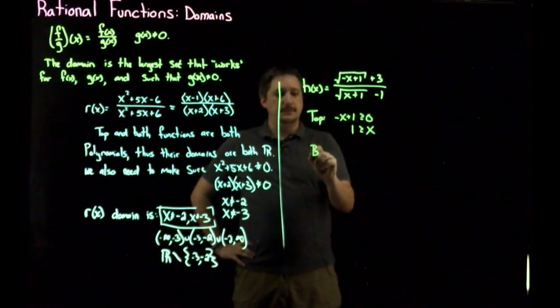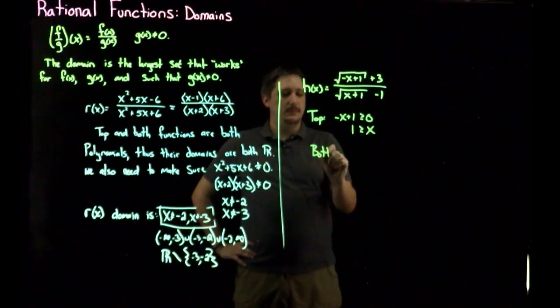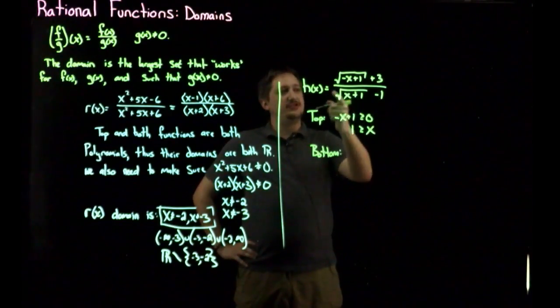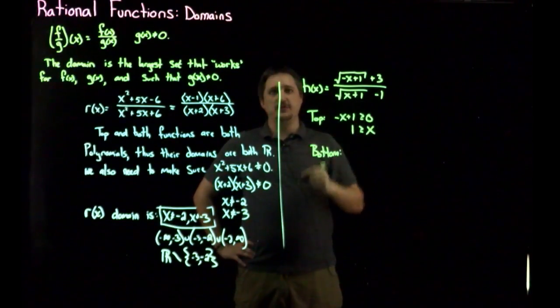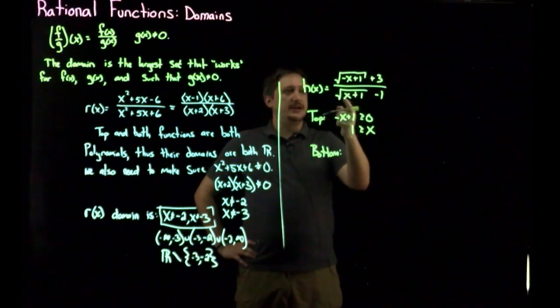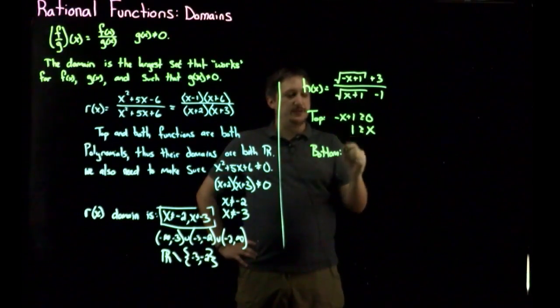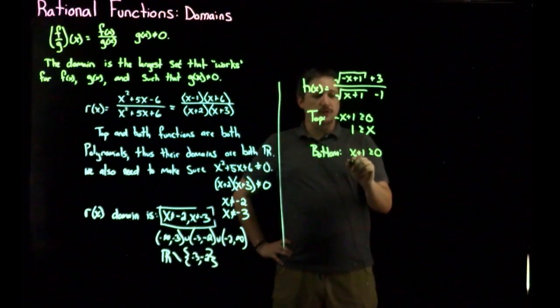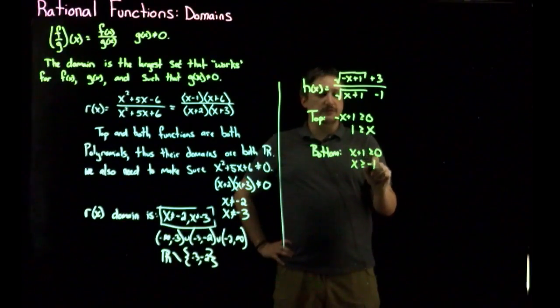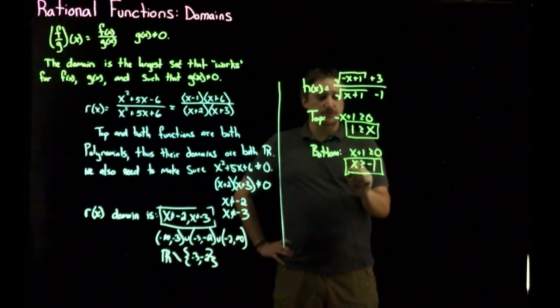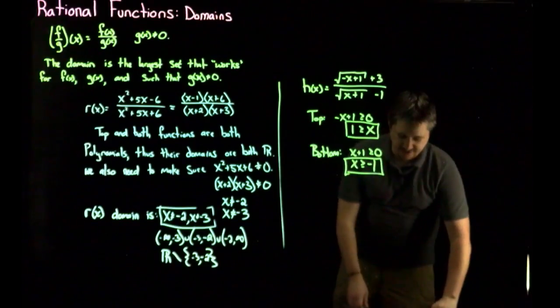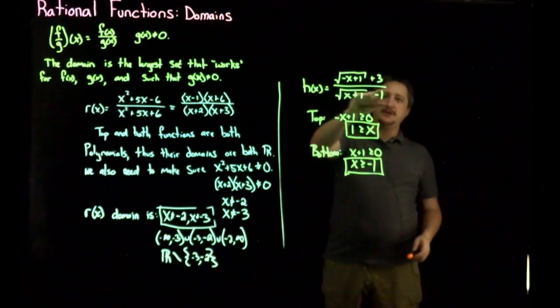Likewise, with the bottom function, the denominator. Again, I'm looking at just this thing in isolation and looking at what the possible restrictions are. So I'm going to look at, again, since it's a square root, I need x plus 1 to be greater than or equal to zero. So I can move then 1 over. I'm going to get x greater than or equal to negative 1. So I have this as a restriction and this as a restriction. But those are, again, to stress this, this is just the case where I'm looking at the top and bottom independently.